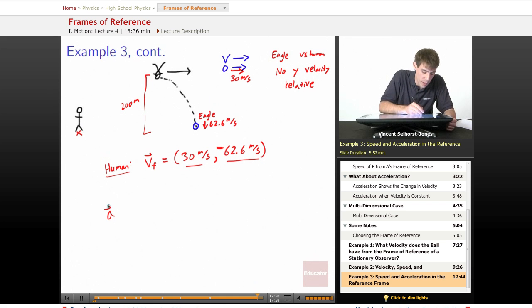Finally, what's the acceleration for human versus eagle? Well, they're both going to have the exact same thing because the velocity of a to b is equal to just the 30 meters per second, comma, zero.